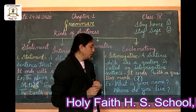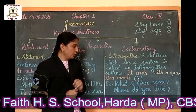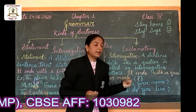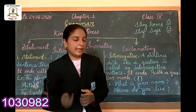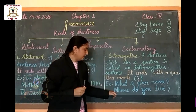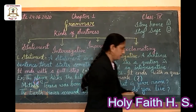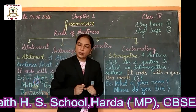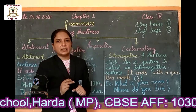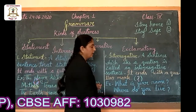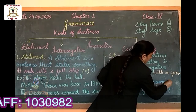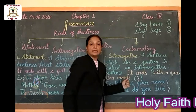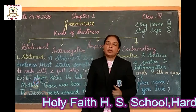See the examples. 'What is your name?' This is an interrogative sentence — it asks a question about your name. Second: 'Where do you live?' It asks a question about the place where you live. Interrogative sentences end with a question mark.